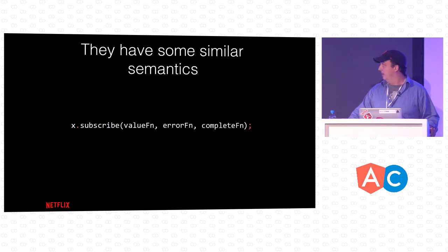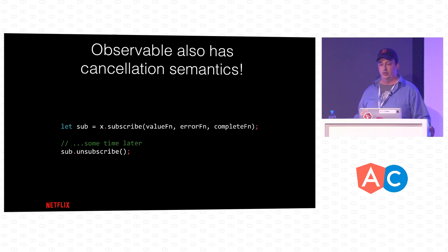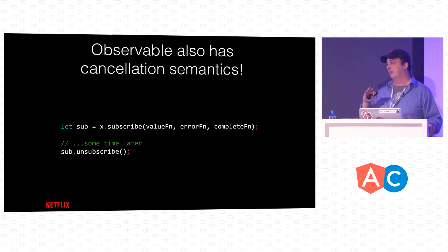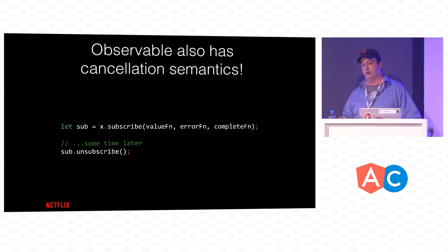The one nice difference is that observable also has cancellation semantics. It returns a subscription on which you can call unsubscribe at any later time to tell the observable to stop producing values.